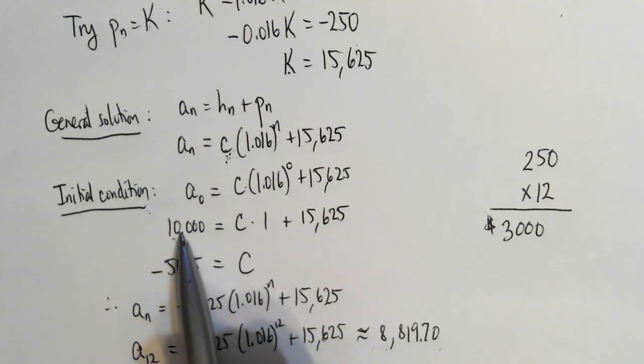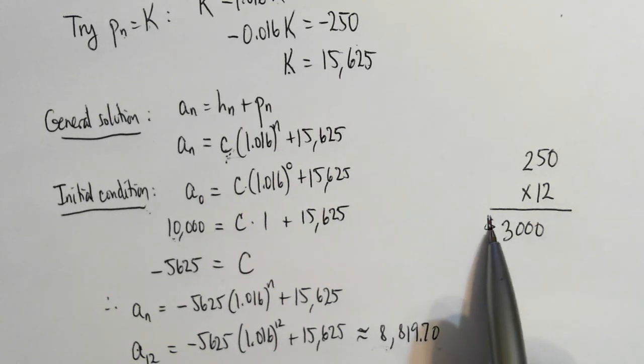However, the principal did not go from $10,000 to $7,000. It went to something that's a whole lot less. That's because a lot of the money that you're paying is paying off the interest as opposed to paying the principal down.